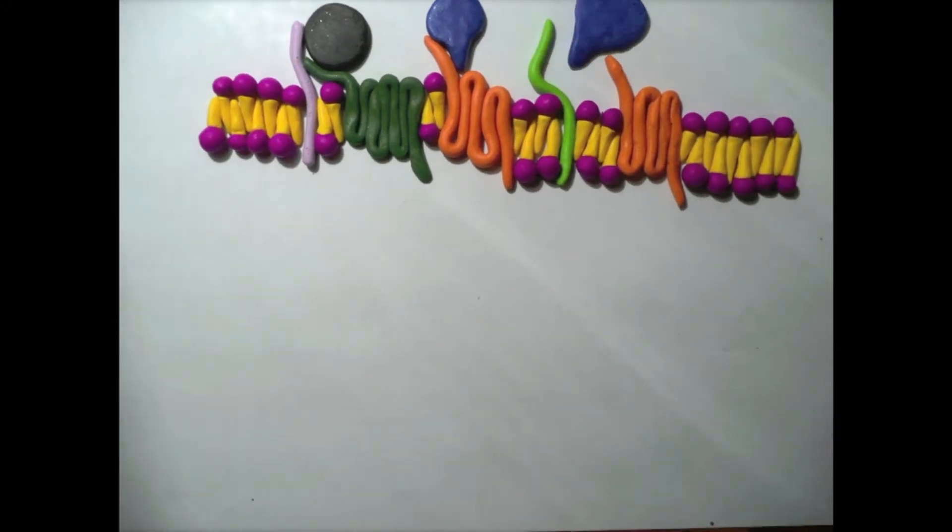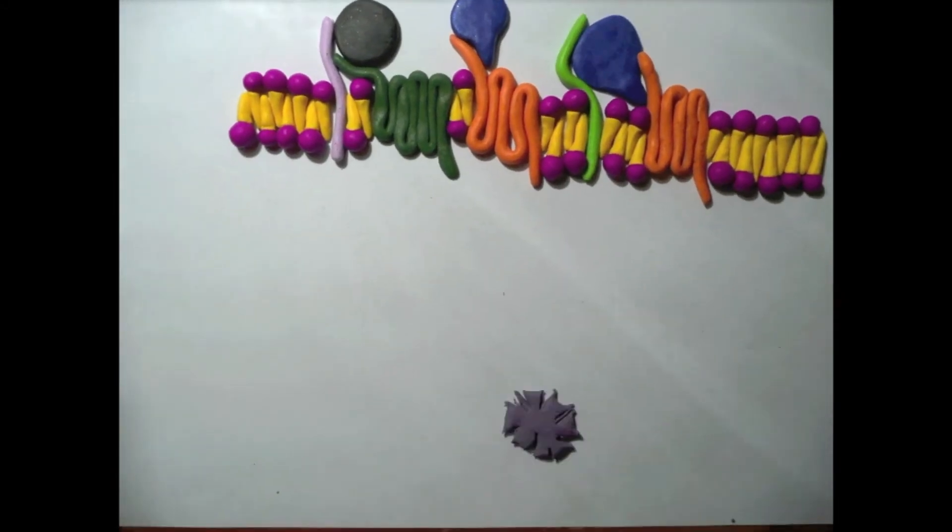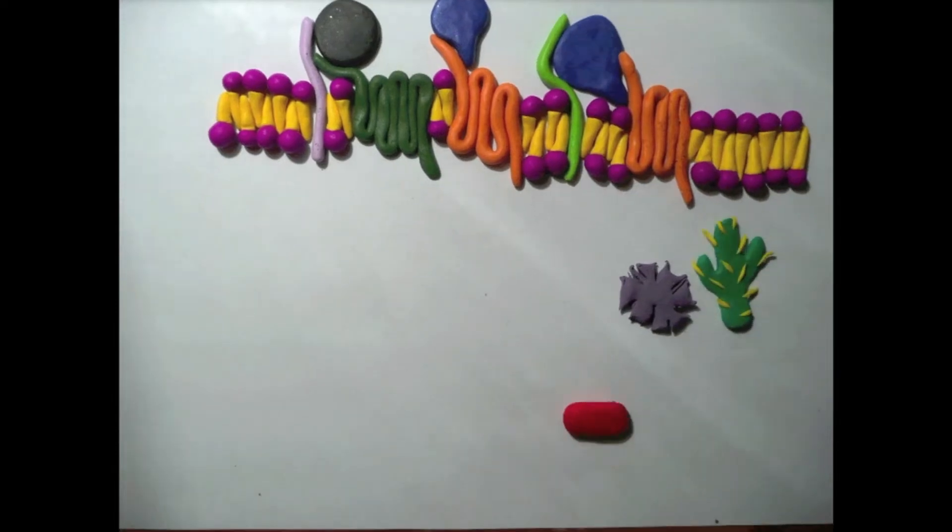So how does it work? It involves transmembrane protein Frizzled, represented in orange, and a generic co-receptor, represented in light green.